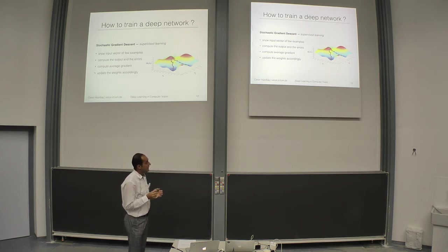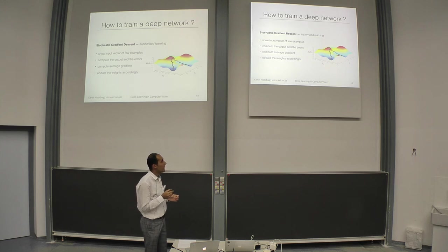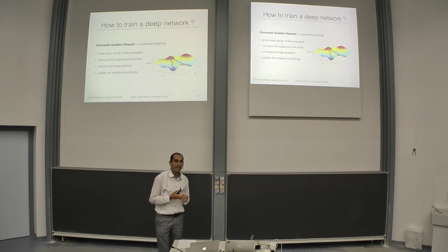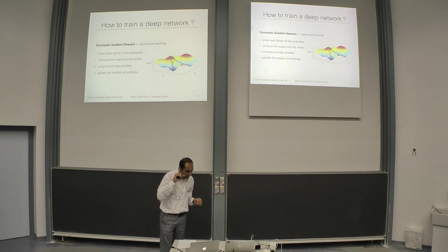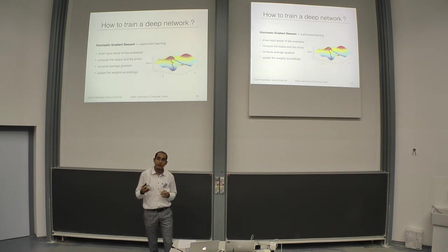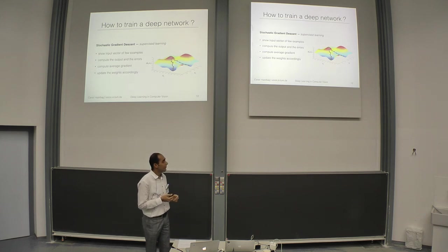Here is an illustration of the problem. Consider you have two parameters and the energy function showing how energy changes with the parameters. You can see there are more than one minimum and many saddle points. With current methods, we can reach some local minimum which gives promising results. Recent work also shows that reaching different local minima does not differ much from one training run to another.